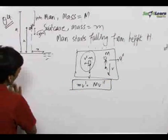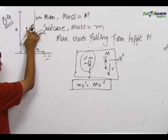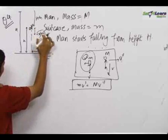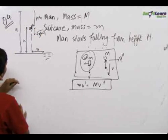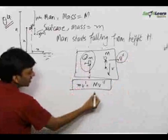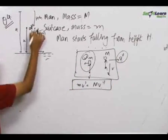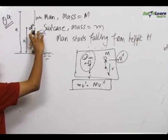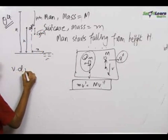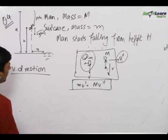Now we want to find out the minimum velocity imparted to the bag, that is the minimum v', so that the man lands on the pond. For that we need to find the minimum v'' so that the man falls in the pond. We can first find out the time the man takes to fall to the ground — that is the vertical direction motion, which is independent of the horizontal velocities imparted.